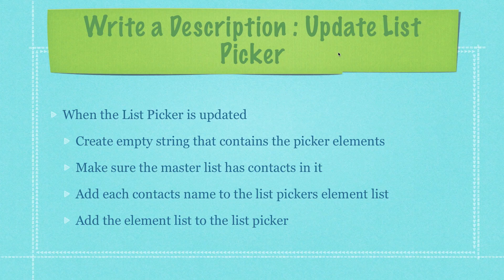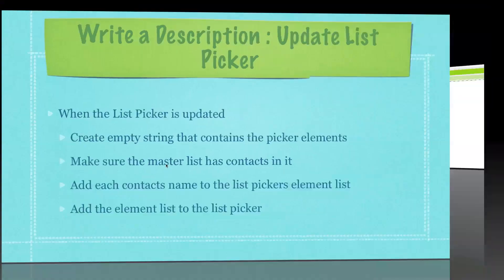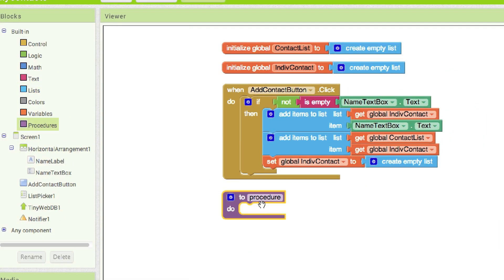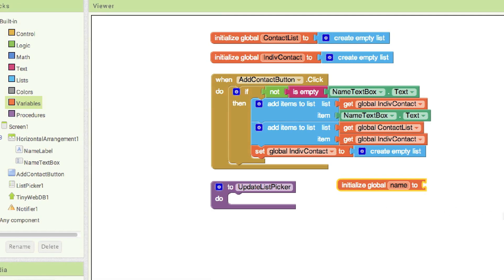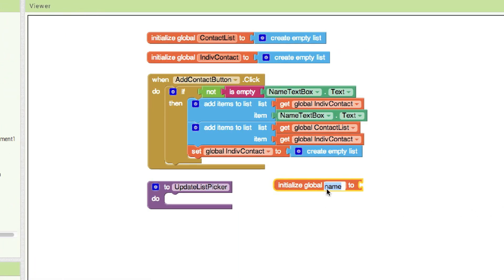Now let's model out the update list picker procedure. I'll go create a procedure and give it the name updateListPicker, then do exactly what the description says. I'm going to create a variable called StringForListPicker — this is the string that will be used to create all the elements in my list picker — and initialize it with no value.